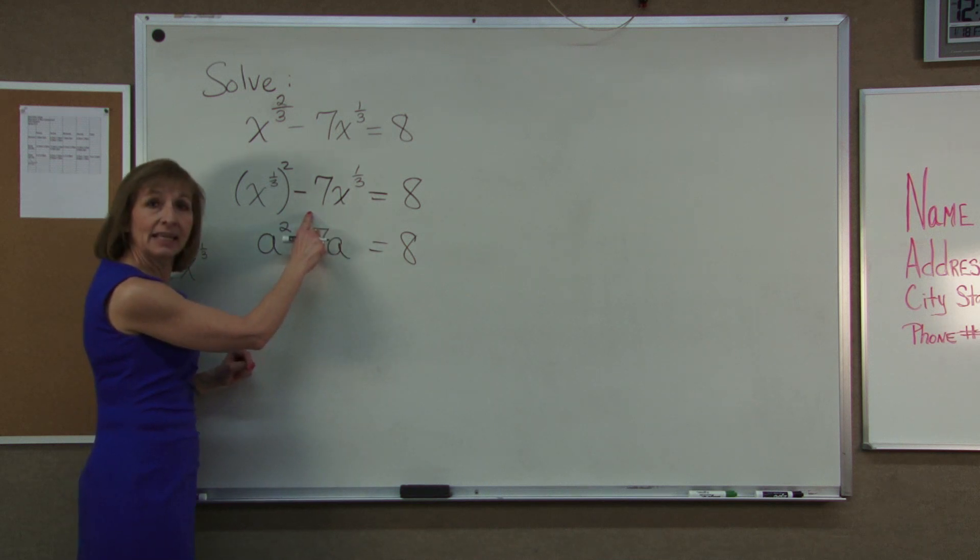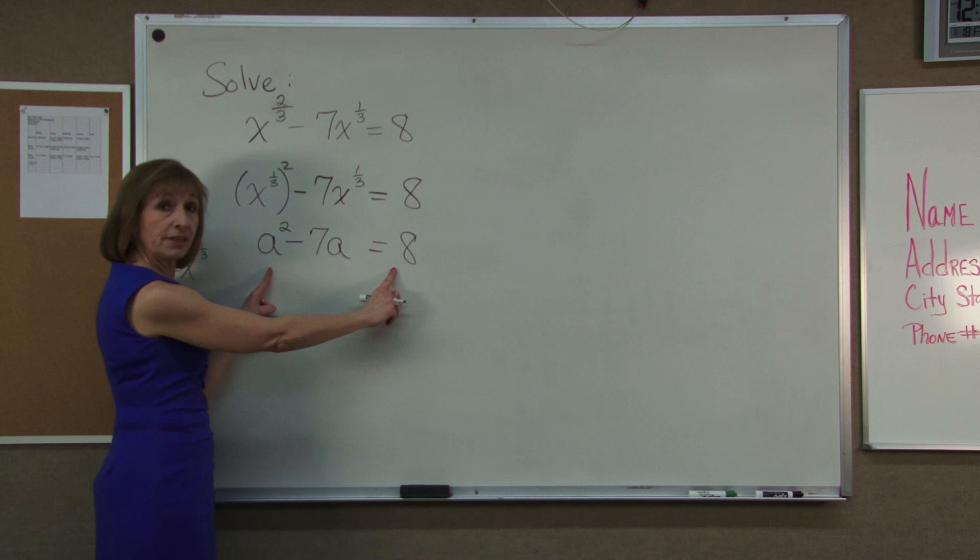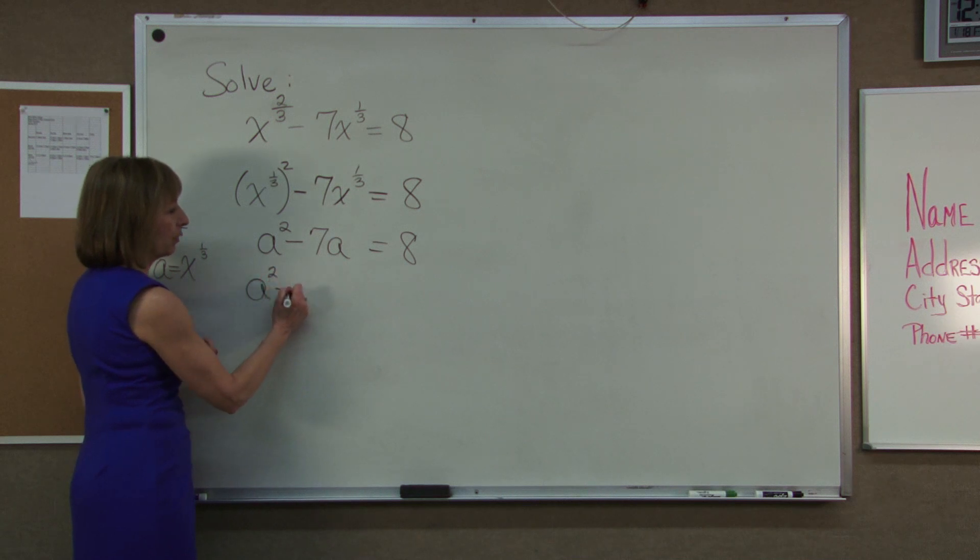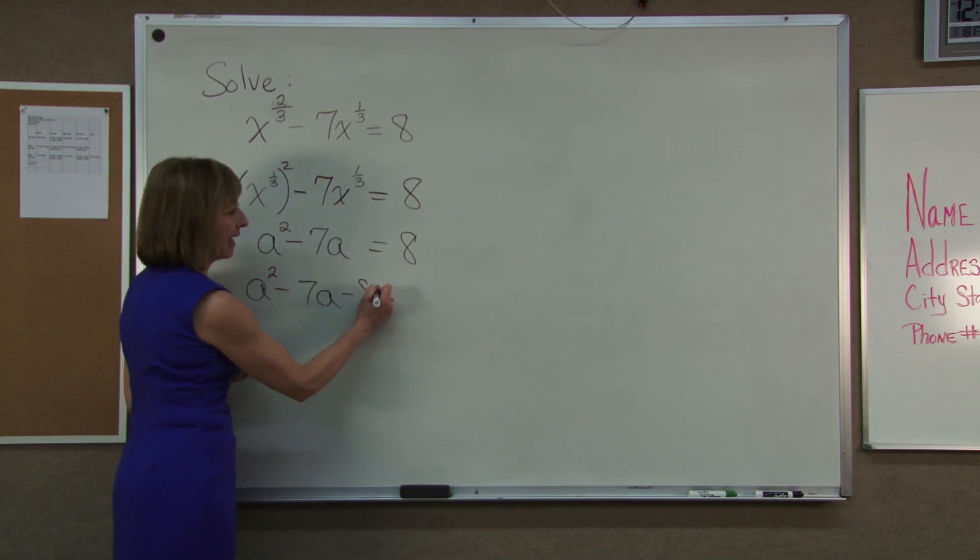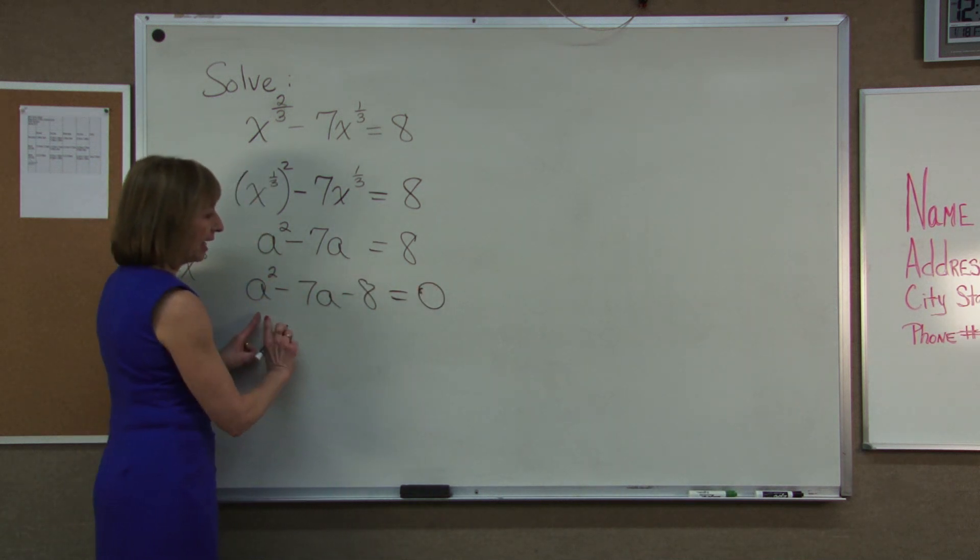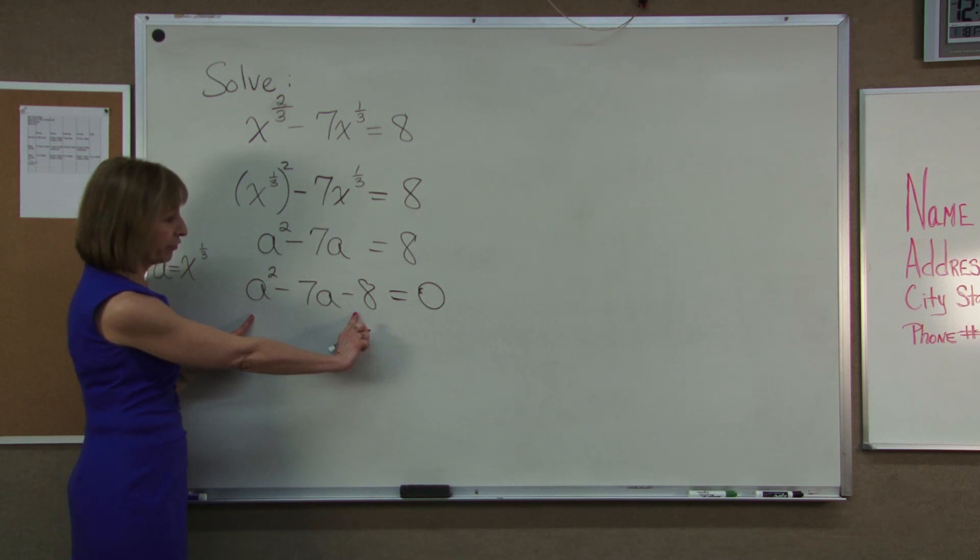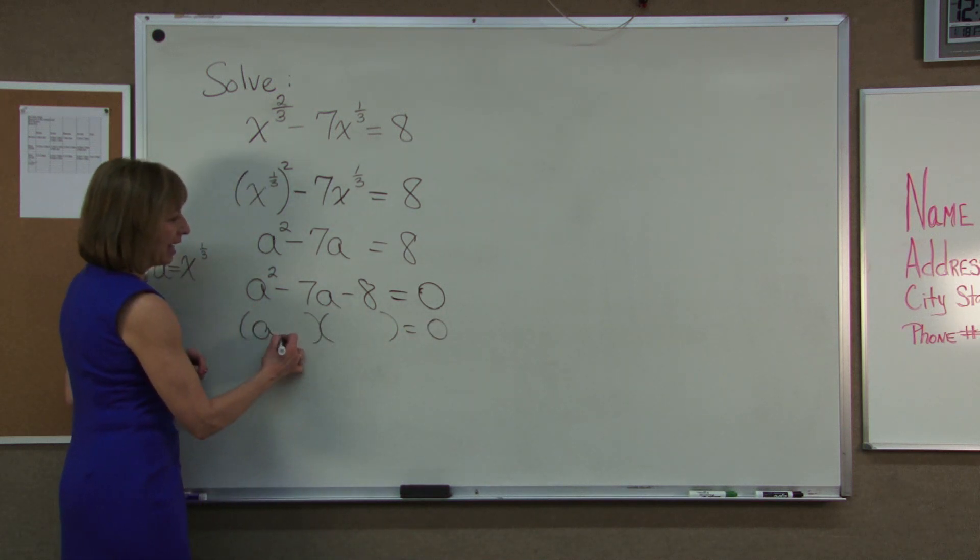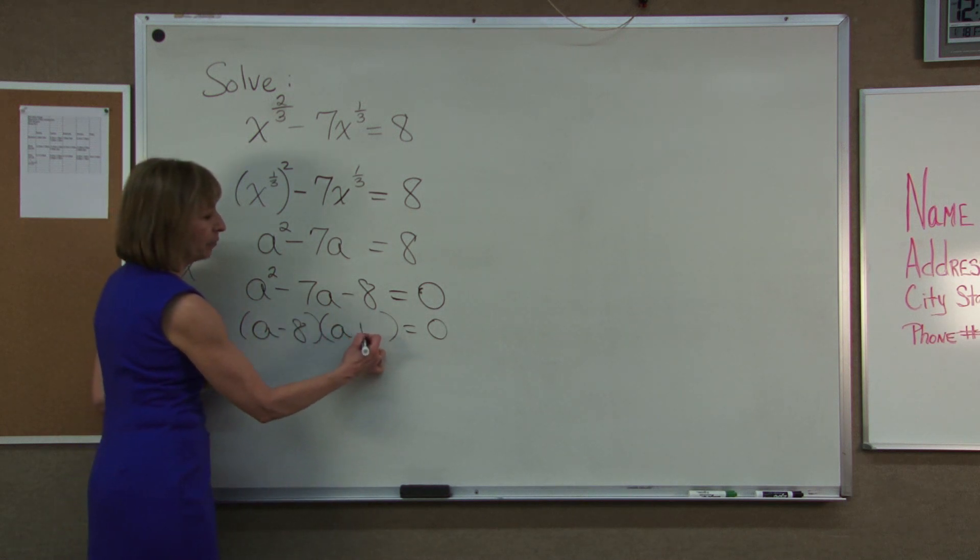So I was able to take it and write it in quadratic form. Well to solve this quadratic equation that we have, we'll want to subtract the 8 over a squared minus 7a minus 8 is equal to 0 and see if we can solve that by factoring, which we can. That factors as a minus 8, a plus 1.